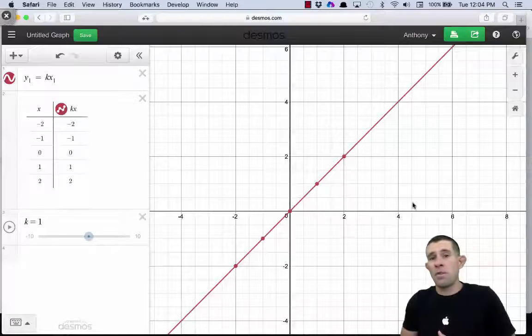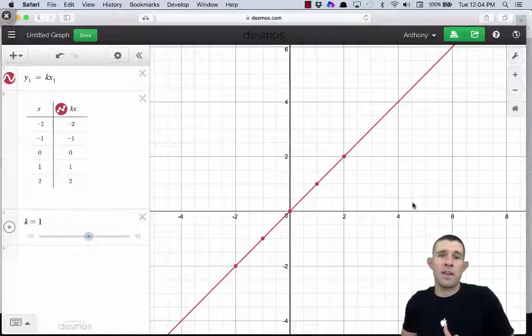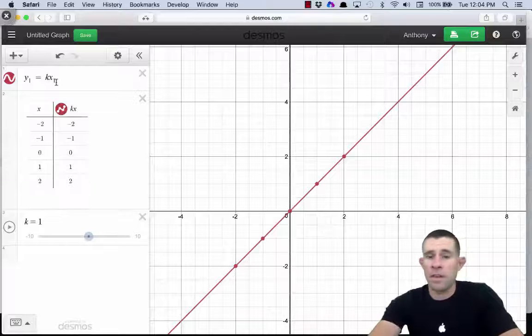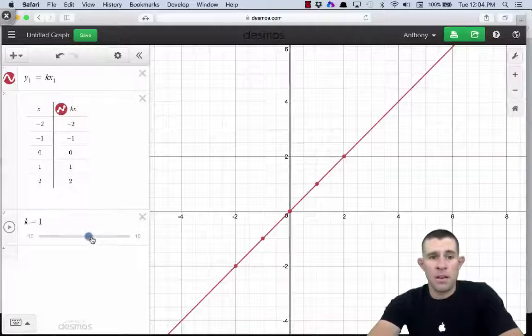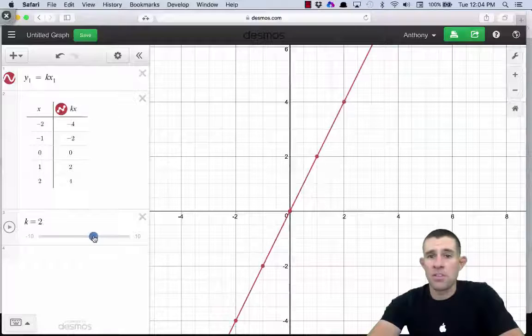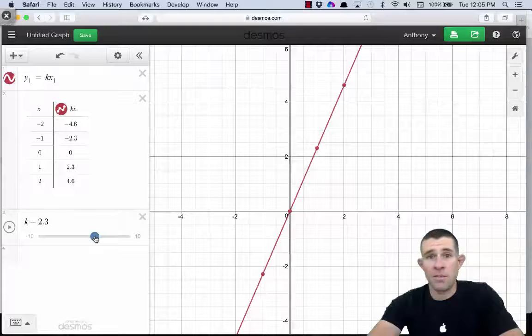Today we're going to start off with the direct variation equation y equals k times x. So you can see we have y equals k times x graphed here in our sketch, and as we change the value of k to make it larger, you should see the steepness of that line increasing.